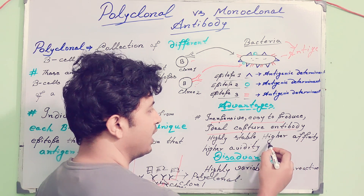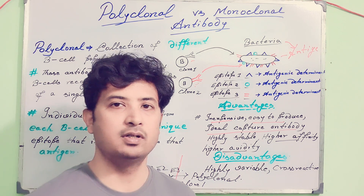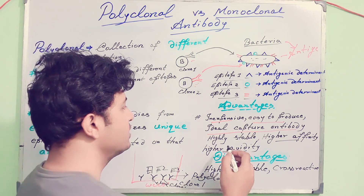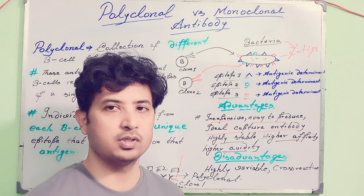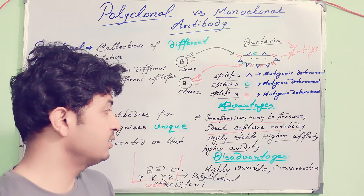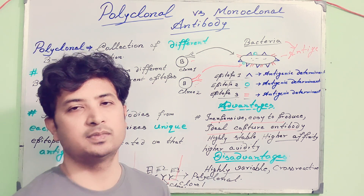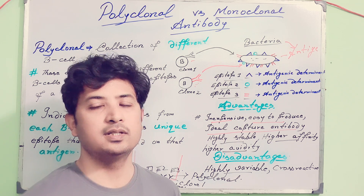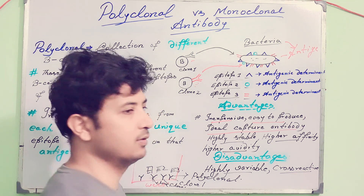Polyclonal antibodies also have higher affinity and avidity — I will cover antigen affinity and avidity in a separate class. They are also stable across a wide range of temperatures and pH, making them easy to store. The main disadvantage, however, is high variability. Variability can sometimes be a problem because it may lead to cross-reactivity.